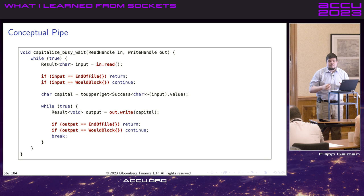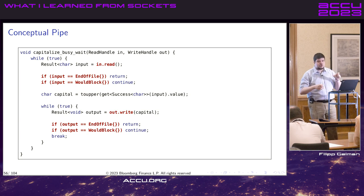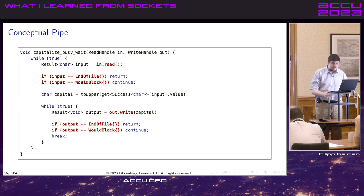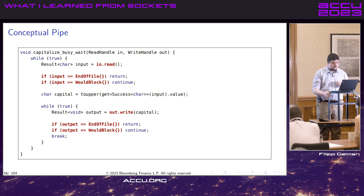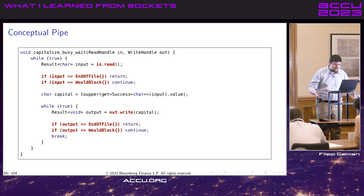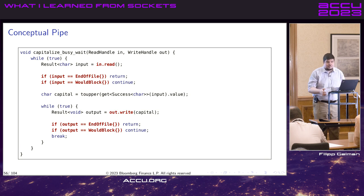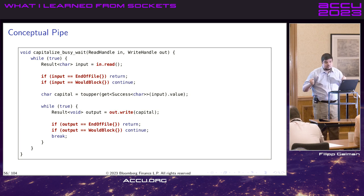Imagine a little pipeline of chars, with a piece that just capitalizes all chars. We get a read handle for input, write handle for output. Try to read — if there's no more data, we're done. But if it would have blocked, I need to busy wait until there's data. Once I have a char, I capitalize it and write it. If it's end of file, nobody cares about my output and I'm done. Otherwise, I busy wait. This works, not efficiently, but it works. We'll come back to this function later.